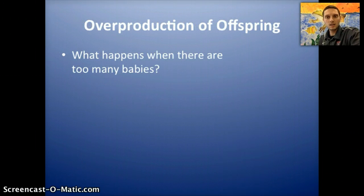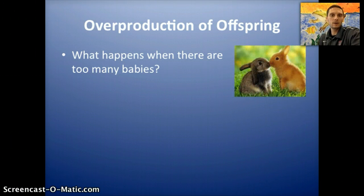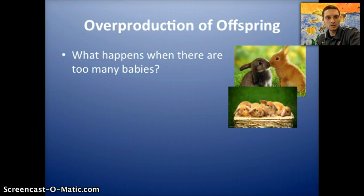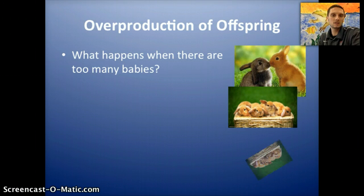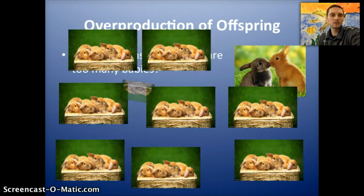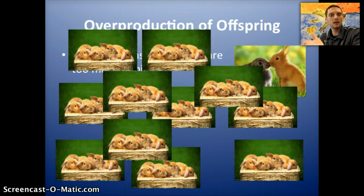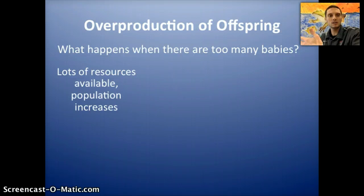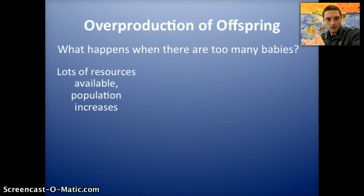This leads to the second question of what happens when there are too many offspring produced. Say we have a population of rabbits — a pair of rabbits that reproduce and have babies and babies and babies. They have lots and lots of offspring. What does this lead to? Well, when there are too many offspring, it's going to lead to competition.